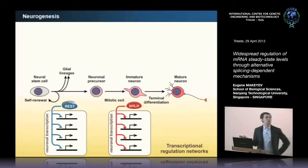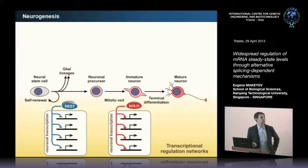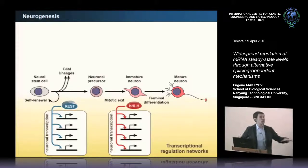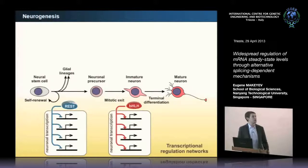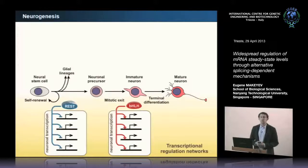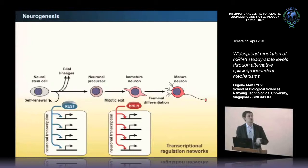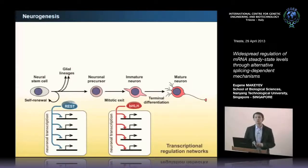What is known is there is transcriptional regulation, and I'm showing you just two examples. This is a very famous transcriptional repressor called REST—a complex that binds to promoters of neuronal genes and makes them silent in non-neuronal cells. This is a good example of what you might call a master regulator, a single unit that regulates many things. Another good example of master regulators is a class of basic helix-loop-helix proteins which also bind to a number of promoters, but unlike REST they are activators—expressed as neural stem cells differentiate into neurons, and they activate expression of a number of neuronal genes.